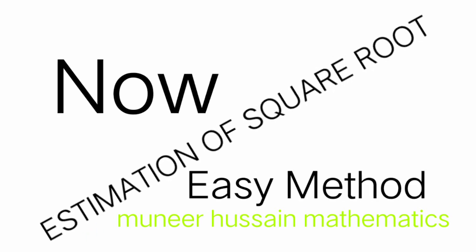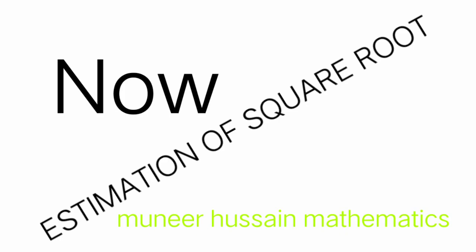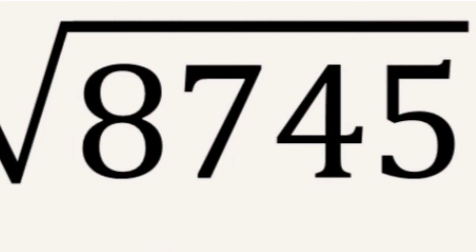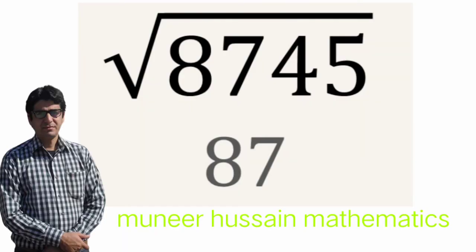Now the second part of the video is to find the square root by estimation. The question is: square root of 8745. First of all, we shall take the digits without the unit digit and the tens digit. Here 5 is the unit digit and 4 is the tens digit, so we are left with 87.